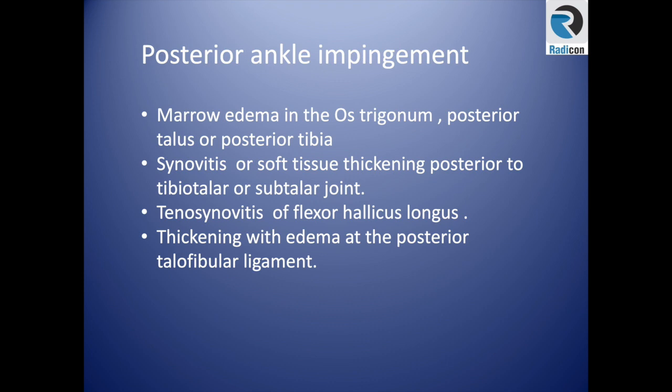There are other types, including anterior and posterior medial impingement, which I will not cover here. Moving to posterior ankle impingement: classically we see marrow edema at the os trigonum, posterior talus, or posterior tibia, with synovitis or soft tissue swelling. We may also see associated tenosynovitis of the flexor hallucis longus as it passes through that area, and thickening and edema of the posterior talofibular ligament.